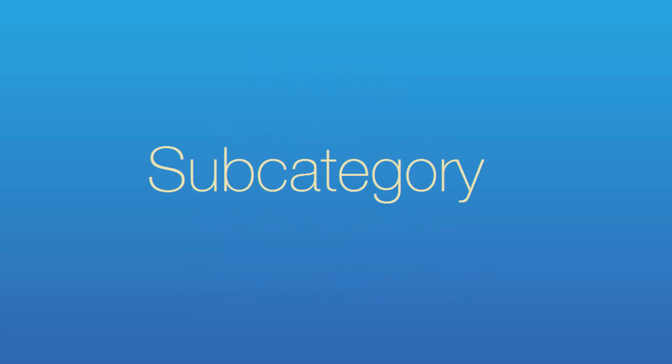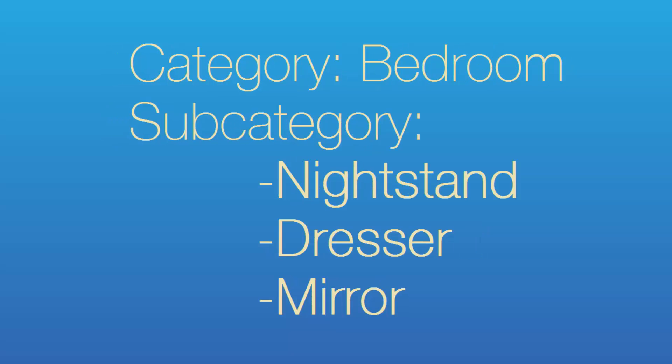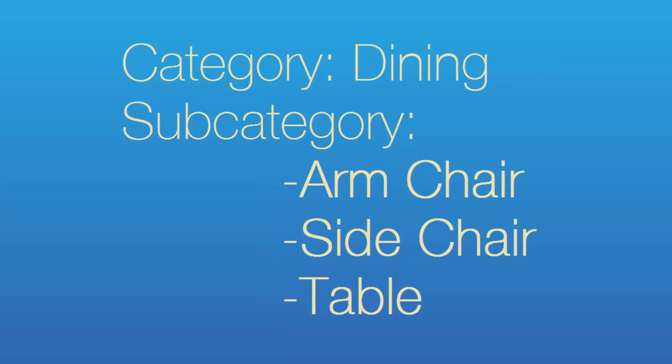Next is the subcategory. The subcategory field generally contains what the item is. For example, under the upholstery category, subcategories could include sofa, loveseat, and chair. Under the bedroom category, subcategories could include nightstand, dresser, and mirror. And under the dining category, subcategories could include armchair, side chair, and table.